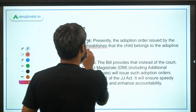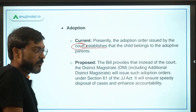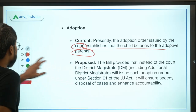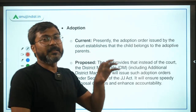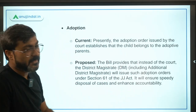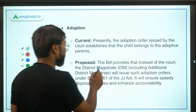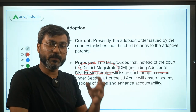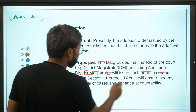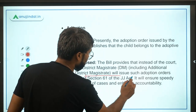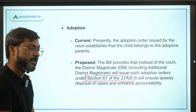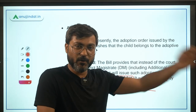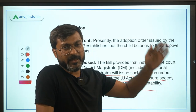Currently, adoption orders are issued by the courts, which establish that the child belongs to the adoptive parents. After the new amendment, these adoption orders can be issued by the District Magistrate, including the Additional District Magistrate, under Section 61 of the Juvenile Justice Act. This will ensure speedy disposal of cases and enhance accountability, as the District Magistrate is more connected to the people at the local level compared to judges in court.